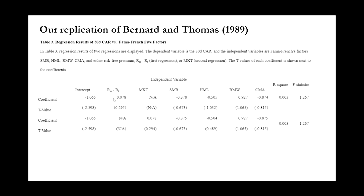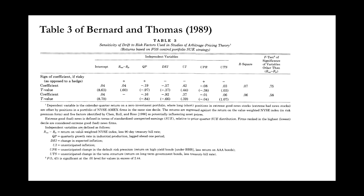Looking at Table 3 in our replication — similar to how hedge fund managers must prove their alpha is uncorrelated with PEAD — Bernard and Thomas 1989 had to prove that PEAD was uncorrelated with asset pricing models. In our replication, we replace their model with the Fama-French five factors and use regressions to find to what extent cumulative abnormal returns are correlated with those factors. The only significant result is the intercept, showing that post earnings announcement drift is a distinct risk factor from the Fama-French five factors — both in 1989 and still in 2022.